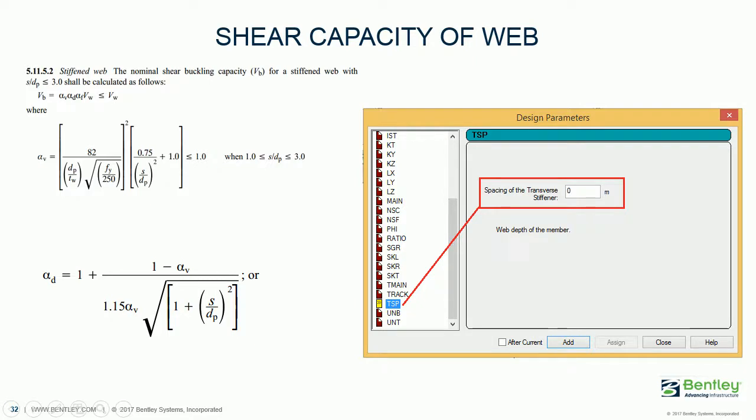If you want to provide the spacing of the stiffener, you need to use the parameter called TSP. TSP can be defined directly from the design parameter under AS4100 code, or you can put it in the graphic input editor. If you look into this equation, VV is depending on different coefficients along with VW. The two coefficients are AV and AD. Both these coefficients depend on the variable called S, which is the spacing of the stiffener.